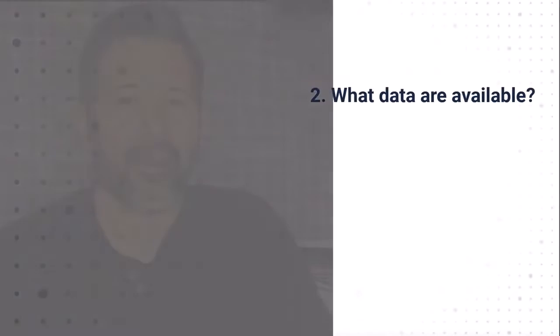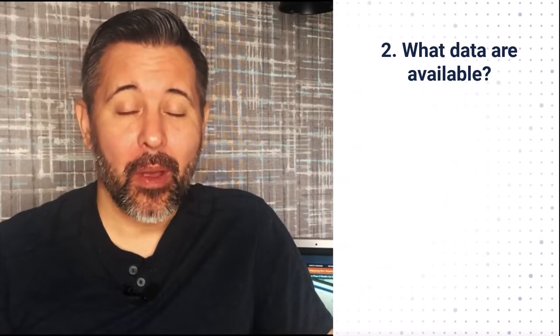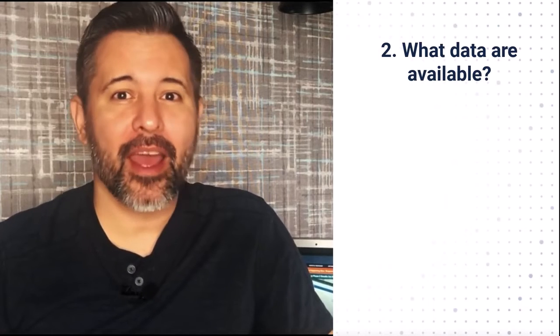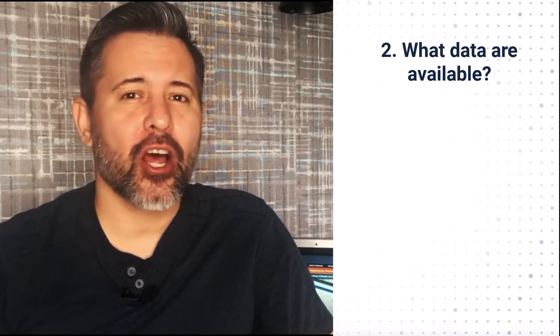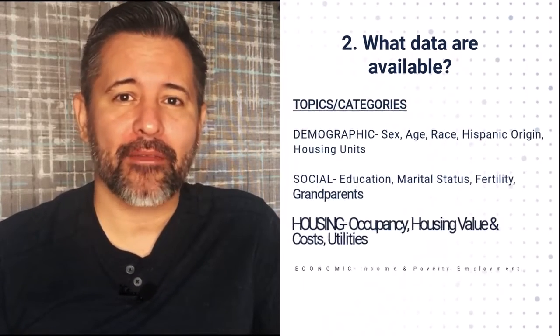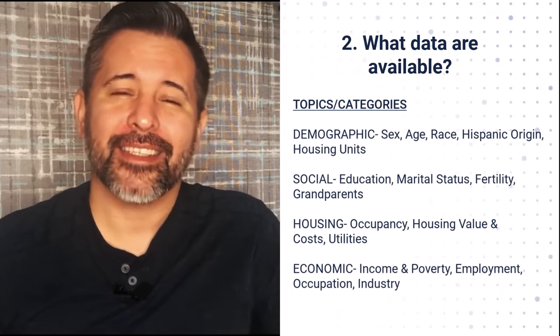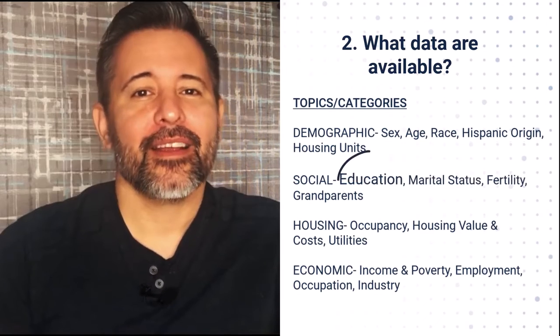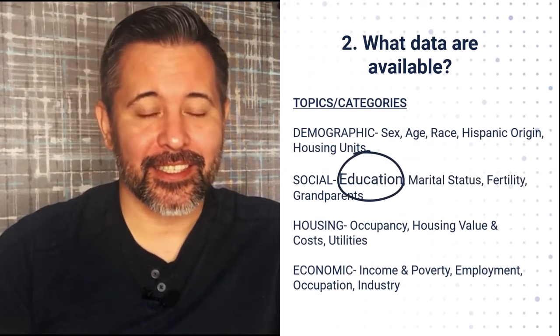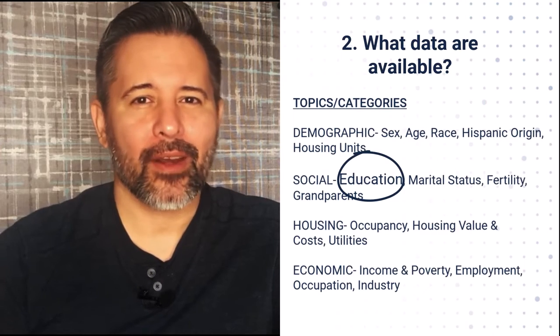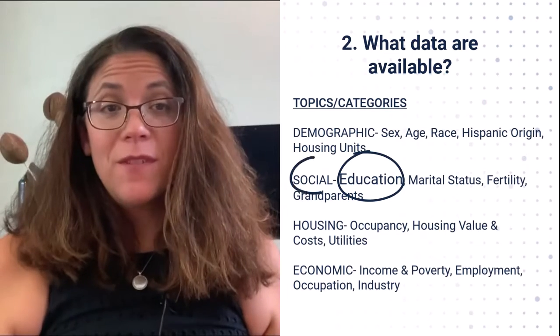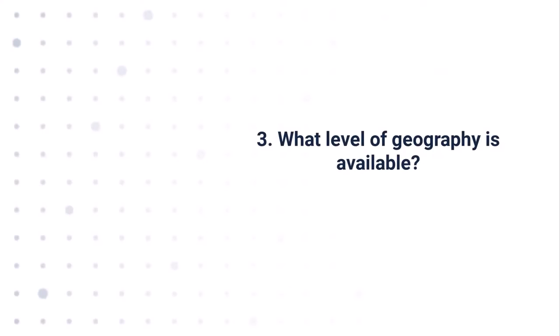So census data comes from surveys and censuses taken at a variety of time intervals. You're right. The Census Bureau measures the economy, people, and places. We publish statistics on numerous topics, which include demographic, social, housing, and economic. Defining your topic is a key element in formulating your data question. Since you're interested in education statistics, let's figure out what category that data would be in. Since I know that I'm looking at social characteristics now, what do I need to know next?